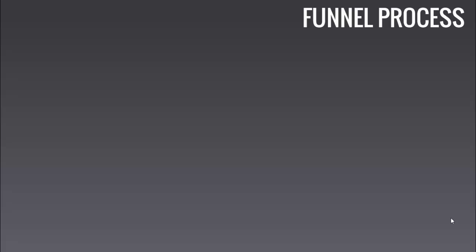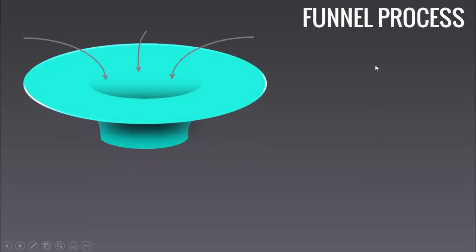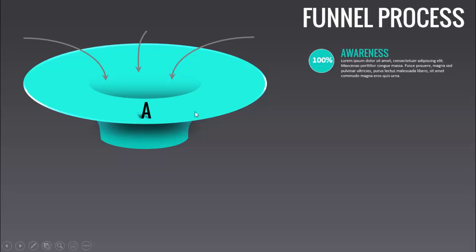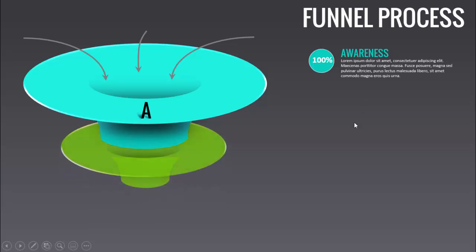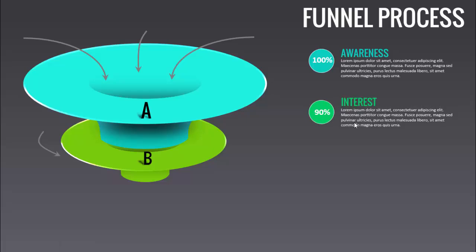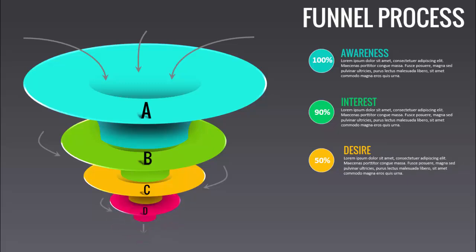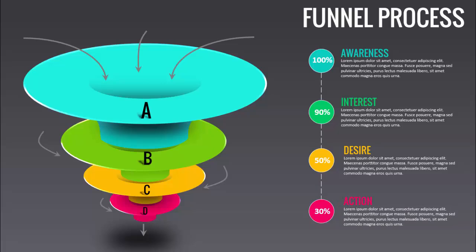In today's tutorial I'm going to show you how to make a four options funnel design in PowerPoint. When I click, it will show you the first step A — this is a 3D-looking shape with arrows pointing towards the hole, giving the first option of 100% Awareness. The next steps are B with 90% Interest, C with 50% in orange, and D with 30% Action.